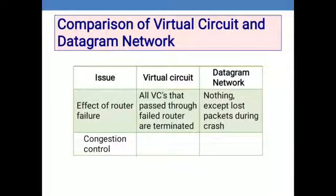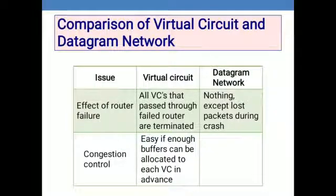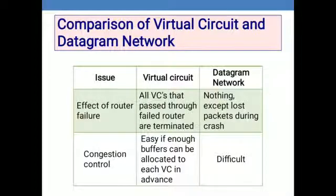For congestion control, it is easy in virtual circuits if enough buffers can be allocated to each VC in advance — that is, before transmitting the data, buffers are adjusted to control congestion. In datagram networks, congestion control is very difficult. This concludes the differences between virtual circuit and datagram networks.